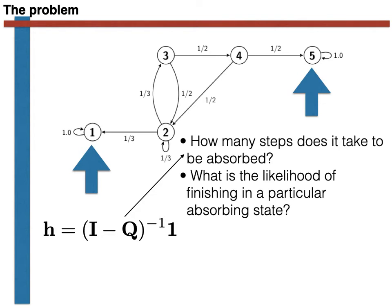Similarly, we can derive an expression that gives us a matrix, capital H, of conditional probabilities for finishing in each of the recurrent states given that we start in each of the transient states.